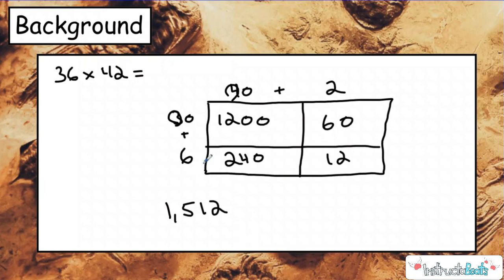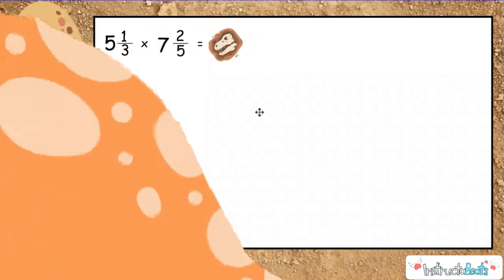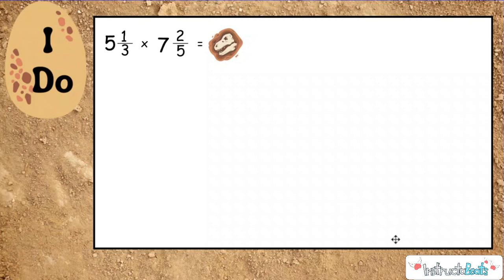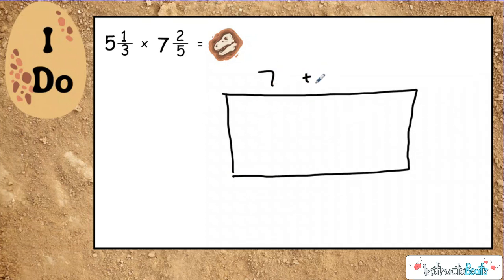So we're going to be doing the same type of skill today, just with mixed numbers. So here we have a problem. We're trying to figure out what fossil does this number represent. So we have 5 and 1/3 times 7 and 2/5. And previously we may have taught you to turn those into improper fractions, but today we're going to be using our distributive property knowledge.